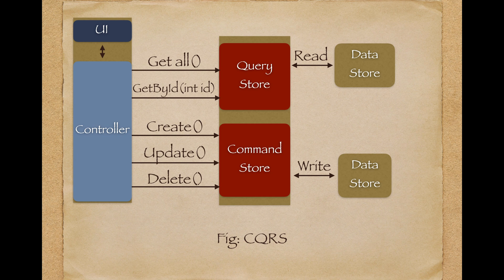Looking at this figure, on the left-hand side we have a UI and a controller. Our application may have a requirement to read and write data to the database. For that we may have methods like get all, get by ID, create, update, or delete. Get all and get by ID just fetch data, so they fall under query. Create, update, and delete change the state, so they fall under command.